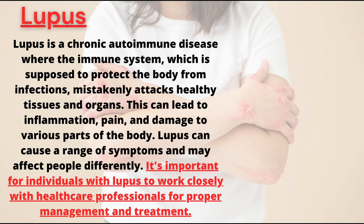Lupus is a chronic autoimmune disease — a very dangerous autoimmune disease where the immune system, which is supposed to protect our body from infection, mistakenly attacks healthy tissues and organs in the body. This can lead to inflammation, pain, and damage to various parts of the body. Lupus can cause a range of symptoms and may affect people differently.